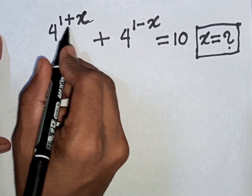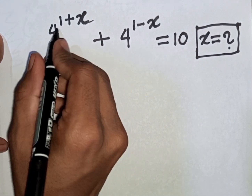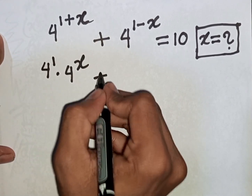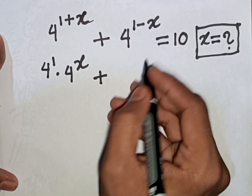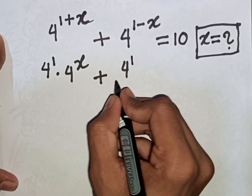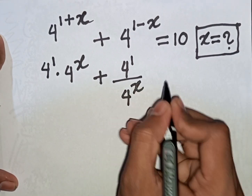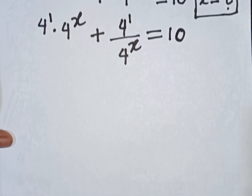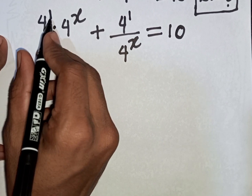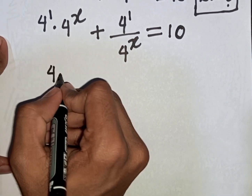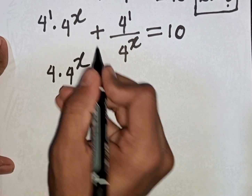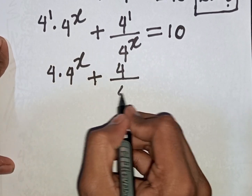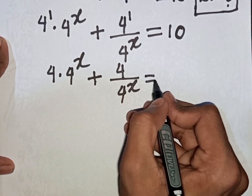4 power (1 plus x) is the same as 4 power 1 times 4 power x. Then 4 power (1 minus x) is the same as 4 power 1 over 4 power x. So we can write 4 times 4 power x plus 4 over 4 power x, which equals 10.